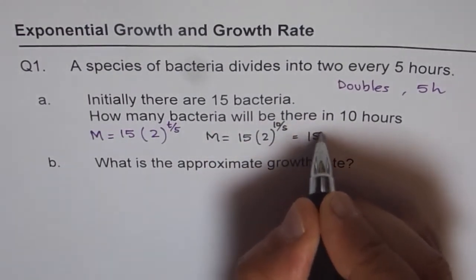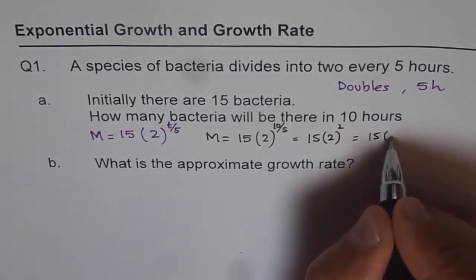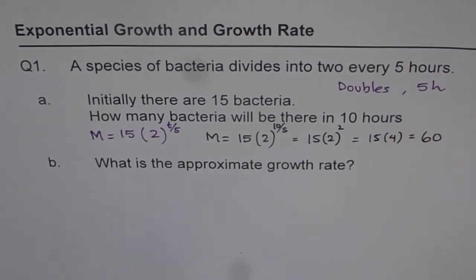That is 2 squared is 4, so 15 times 4 and we get that as 60. So the number of bacteria after 10 hours will be 60. So that is our answer for this particular question.